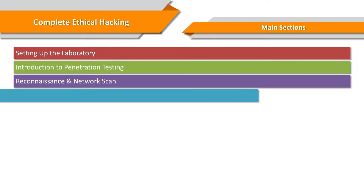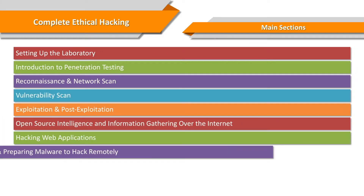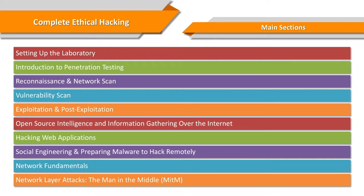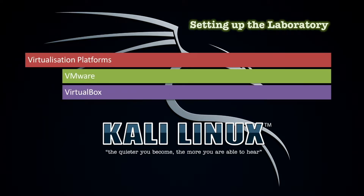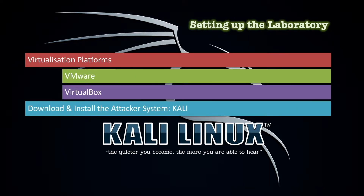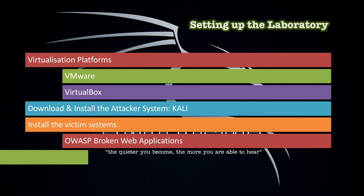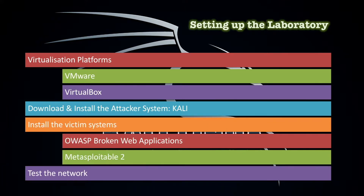These are the main sections of the comprehensive course, so let's see what we'll learn in each section briefly. At the very beginning, we start with setting up the laboratory so we're ready for all of the hands-on practices. We're going to use a virtualization platform such as Oracle VirtualBox or VMware Player. We'll install the attacker system first — Kali — then create a couple of victim devices and test to see if all of the virtual machines are connected to each other.